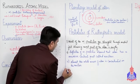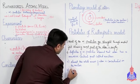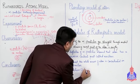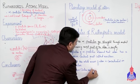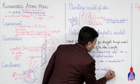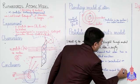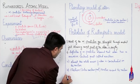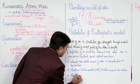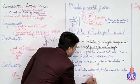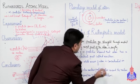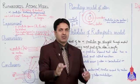چوتھا postulate - electrons (جنہیں extra nuclear part بھی کہتے ہیں) continuously revolve around the nucleus۔ آخری postulate - an atom has equal number of protons and electrons، اس کا مطلب کہ as a whole atom is a neutral particle۔